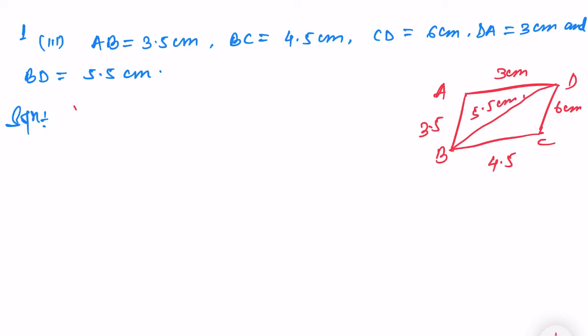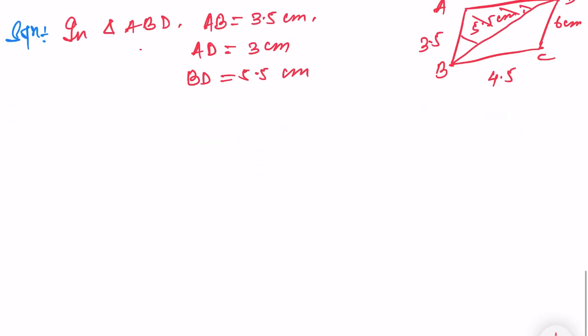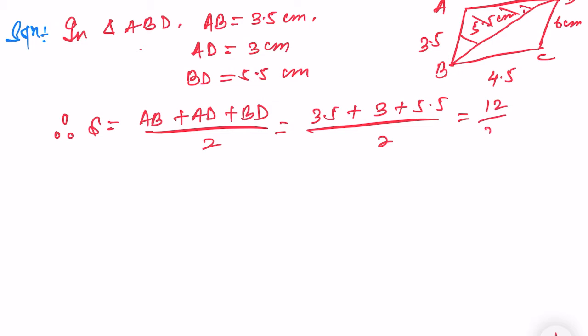So here in triangle, let me take the first triangle ABD. AB is equal to 3.5, AD is equal to 3 cm, and BD is equal to 5.5 cm. So therefore, S would be equal to AB plus AD plus BD divided by 2, which is 3.5 plus 3 plus 5.5 divided by 2, which will be 6.